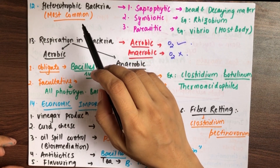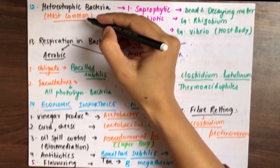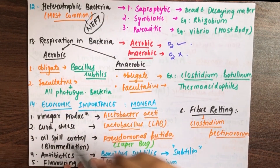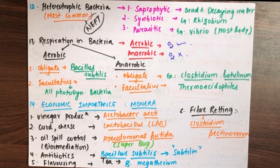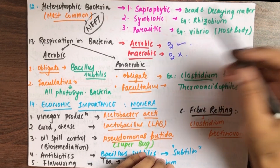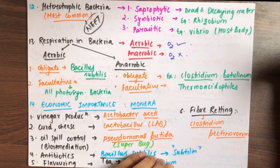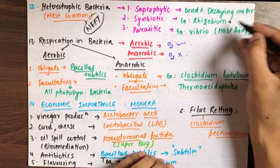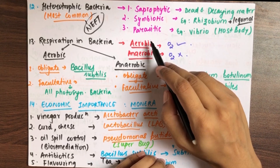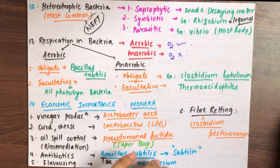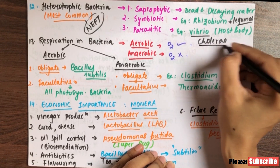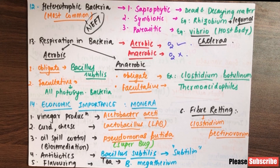Next is heterotrophic nutrition, which is the most common mode of nutrition in bacteria — very important for NEET. Bacteria are mostly heterotrophs, not photo or auto. Heterotrophs have three categories: saprophytes, which act on dead and decaying matter; symbiotics, which live in symbiotic association with other organisms, like Rhizobium with legumes and pulses; and parasitic, which depend on a host body, like Vibrio cholerae, which causes cholera by entering our body.